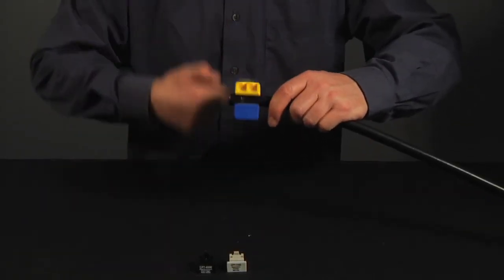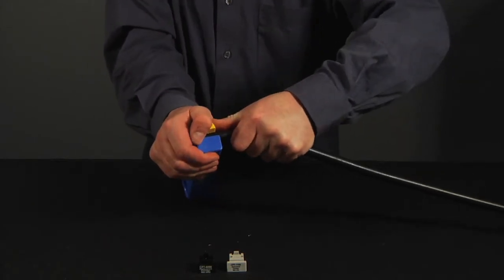For small diameter cables you can pull the jacket and dielectric off the cable with the tool.